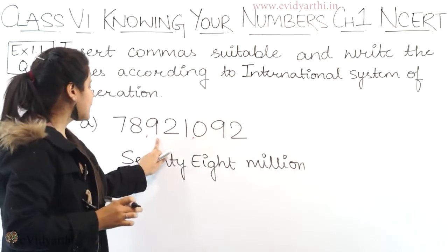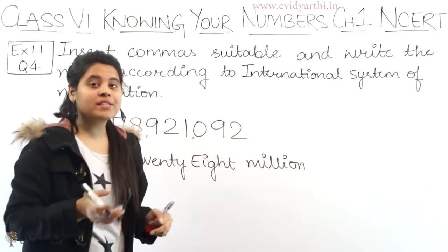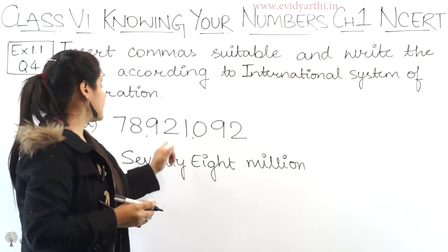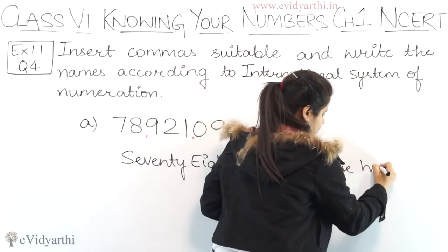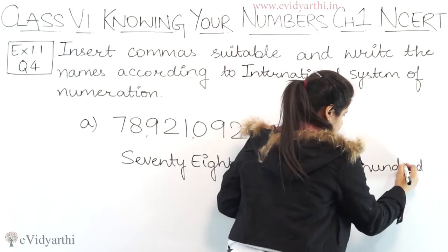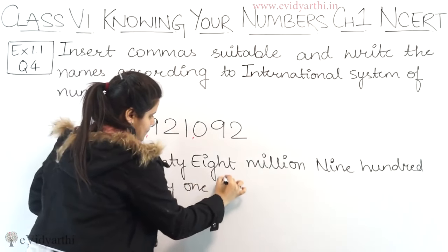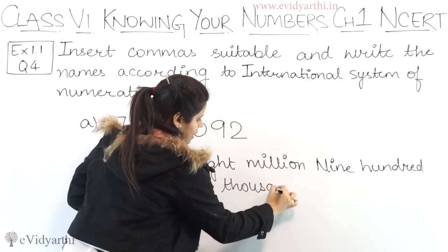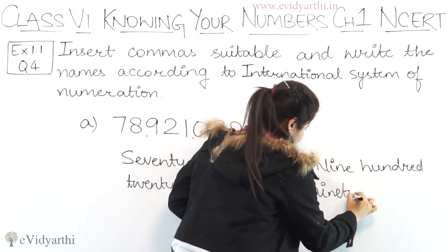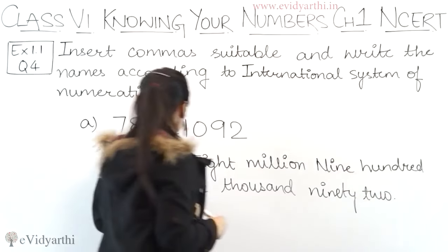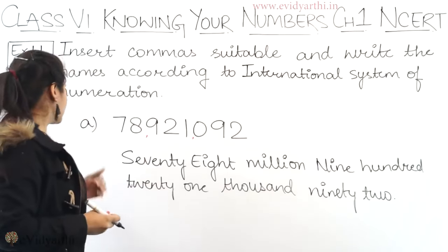Next, if we write the line of numeration, we have 921. Near 921 there are 3 digits ahead. 3 digits means thousand. So this will be written as 921 thousand. Then we have 92 at the end. So the full number is 78,921,092. That was part A.